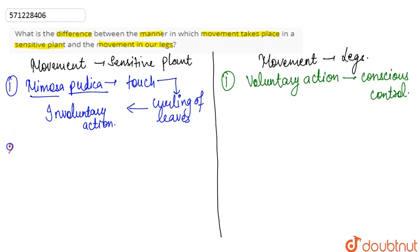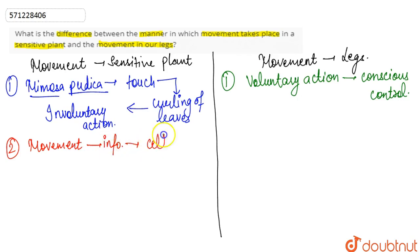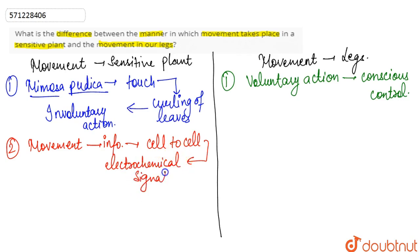The second point of difference is that for the movement in the sensitive plant, the information is transferred from cell to cell by electrochemical signaling. Plants do not have any sort of specialized tissue for the conduction of impulses.